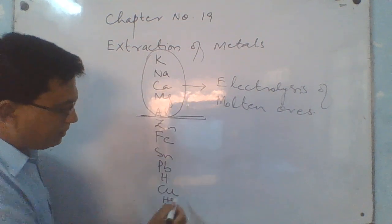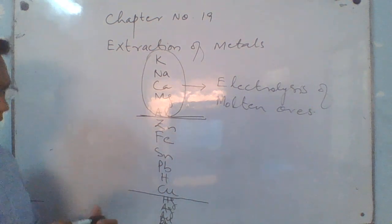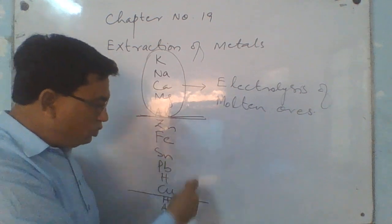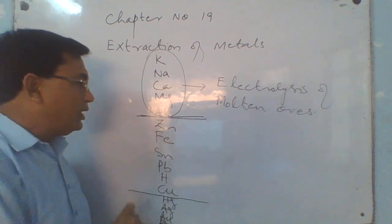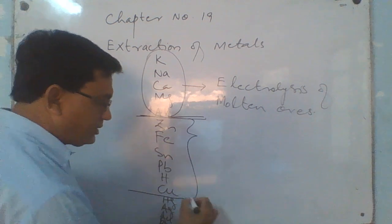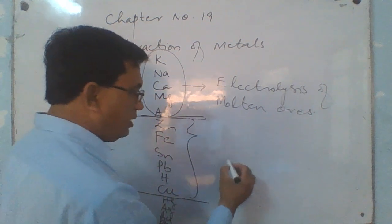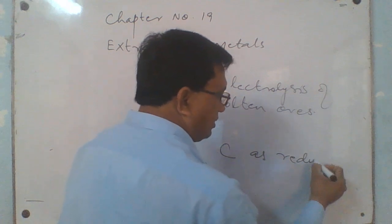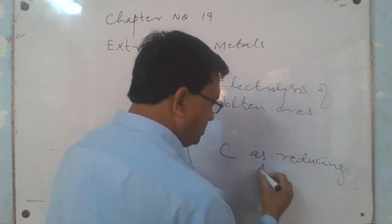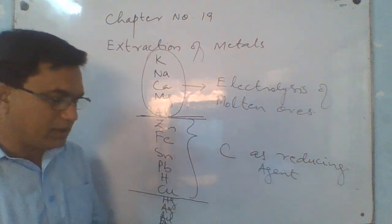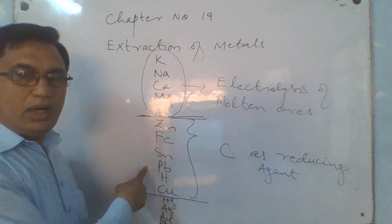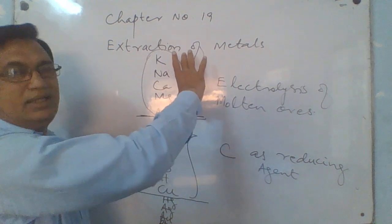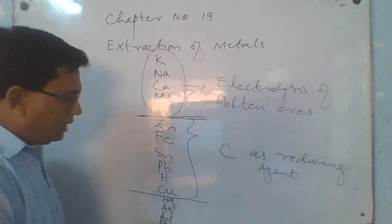From zinc to copper, all these metals are neither too reactive nor too least reactive — these are the intermediates. That's why all these metals are extracted from their ores using carbon as a reducing agent, because carbon has sufficient power to reduce them, as their reduction potential is a little bit higher compared to the highly reactive metals.